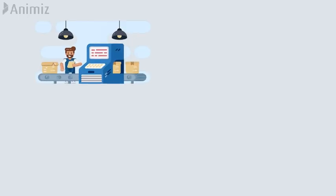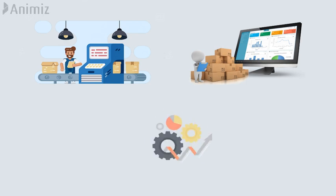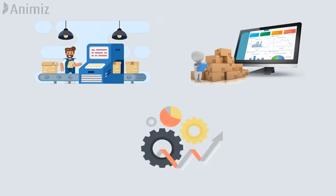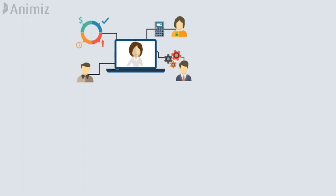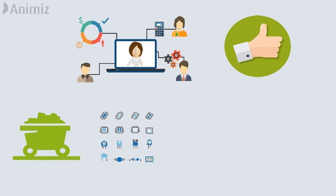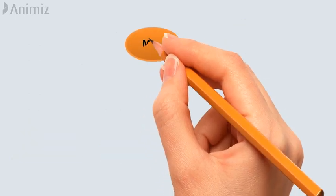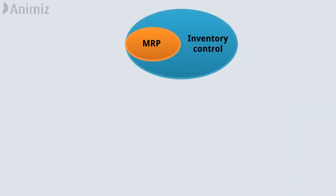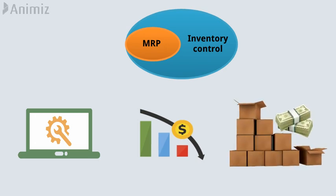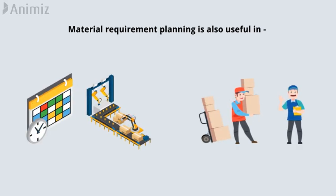Material requirements planning or MRP is a computer-based inventory management technique designed to improve productivity for businesses. Companies use MRP systems to ensure that materials and components are available in the right quantities and schedule their delivery time. MRP is often considered a subset of inventory control and is an effective tool for minimizing unnecessary inventory investment, as well as useful in production scheduling and purchasing of materials.